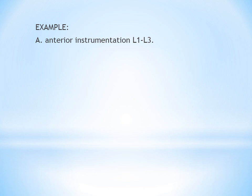Example: Anterior instrumentation L1–L3. The approach is anterior. The vertebrae involved are lumbar, and the number of segments from L1 to L3 is three — L1, L2, L3. The code is 22845, which covers anterior instrumentation for two to three vertebral segments. Since we have three segments, the answer is 22845.